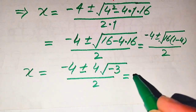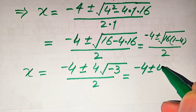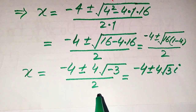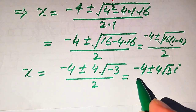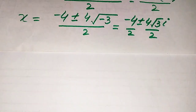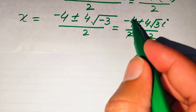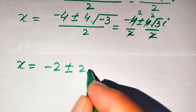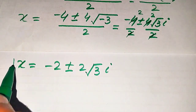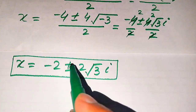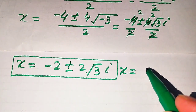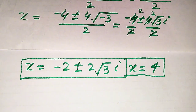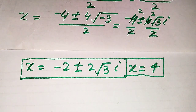We have minus 4 plus or minus 4 times square root of 3 times iota, since a negative sign inside a square root becomes iota. Breaking the fraction, the 2s cancel and we get x equals minus 2 plus or minus 2 times square root of 3 times iota. So the final answer is one real root x equals 4, and two complex roots x equals minus 2 plus or minus 2i√3. Thank you for watching — please subscribe to my channel for more videos.